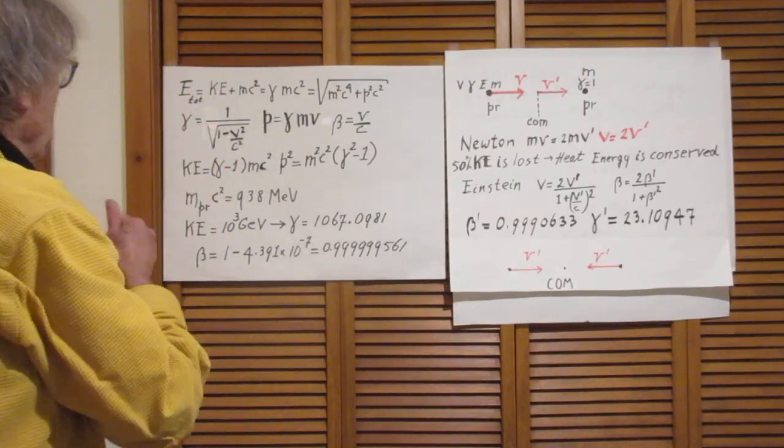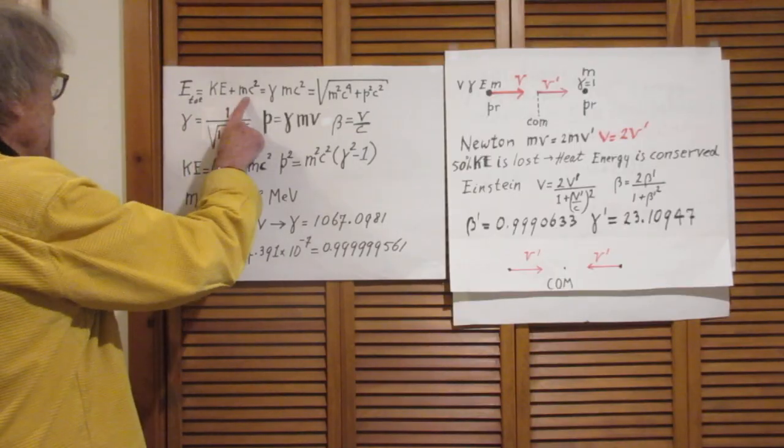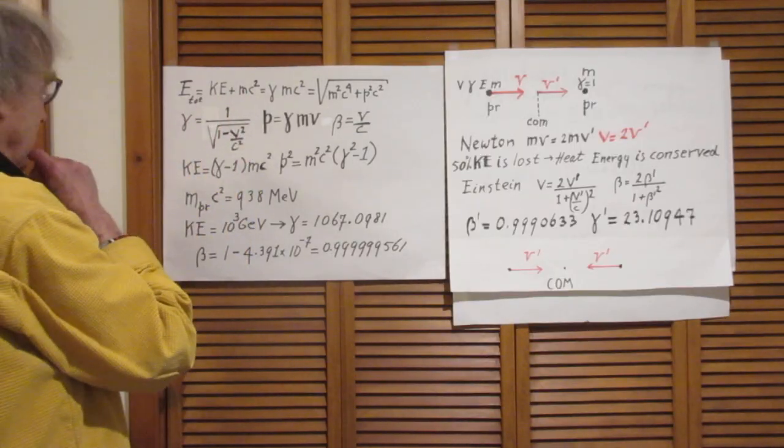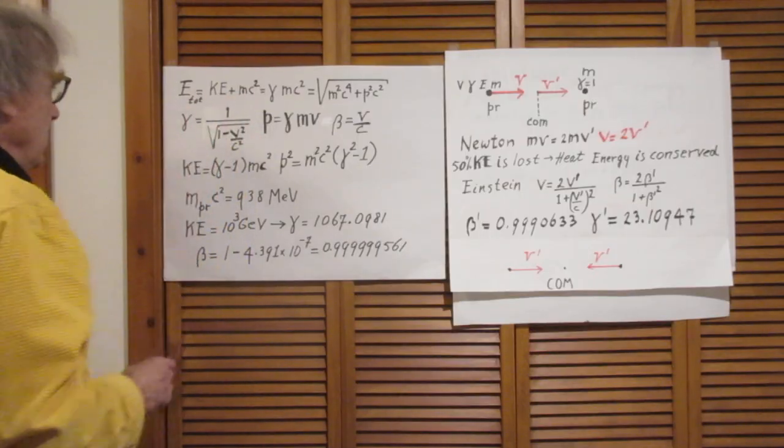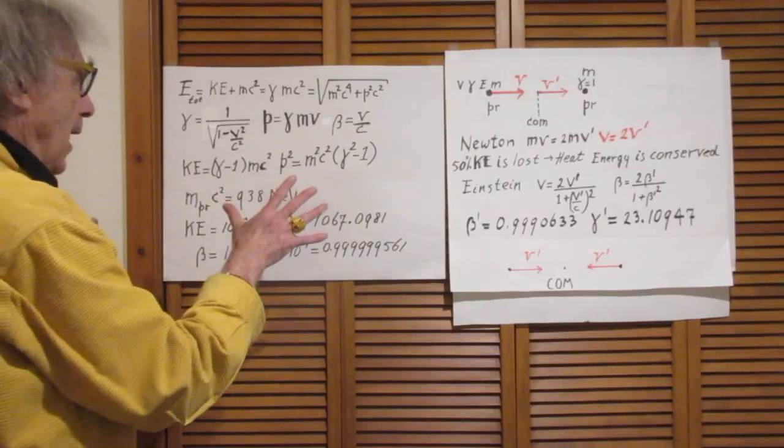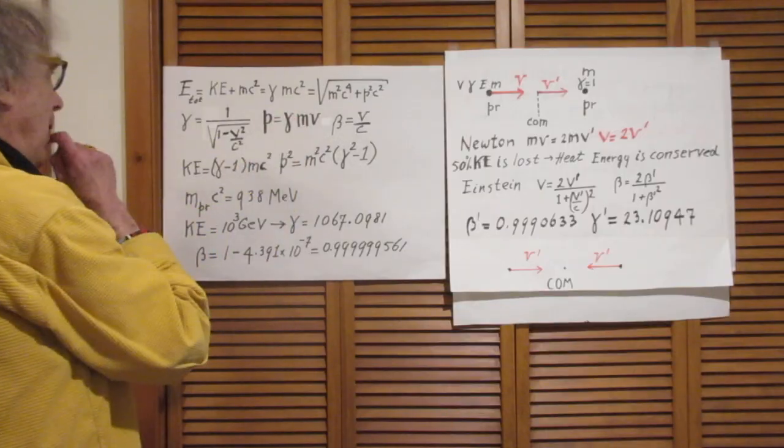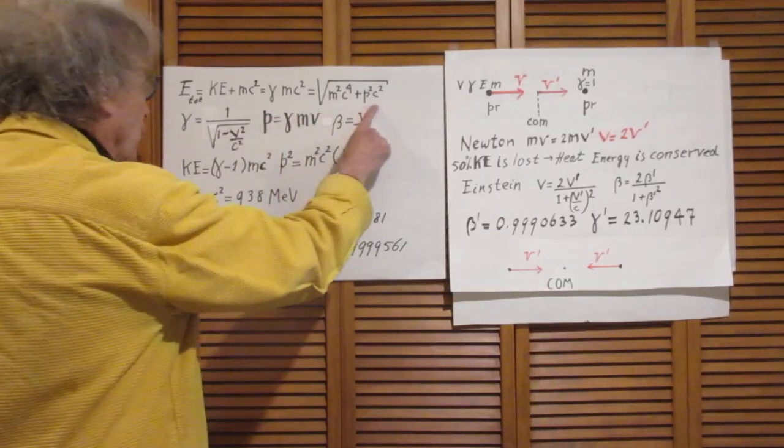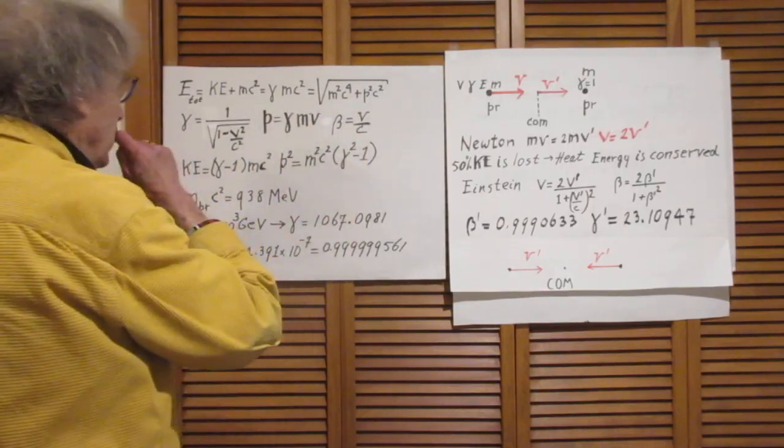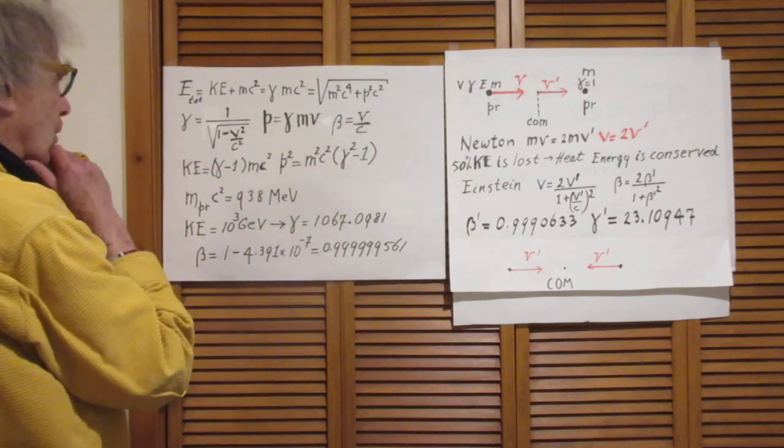In special relativity the total energy of a particle is kinetic energy plus the rest mass energy. M for me is always rest mass. I just write M, it's always rest mass. There is also γmc² and it is also this relation which P is the momentum of the particle.